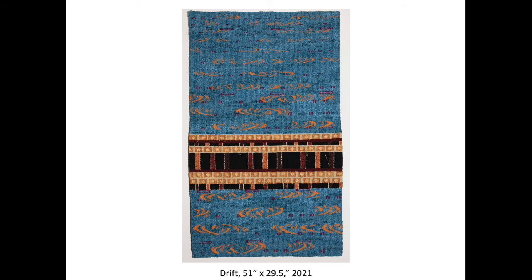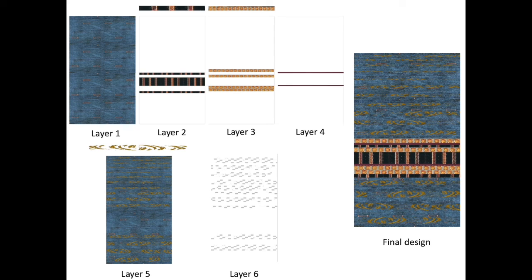I'll explain the process for Drift as well. Layer one is a detail from a blue fabric repeated four times to create the rectangular shape of the design. Layers two and three are repeats from details taken from historical textiles. Layer four is two red stripes. Layer five includes a gold motif repeated up the length of the tapestry, getting increasingly smaller as it progresses up. Layers two through five sit on top of layer one with no bleeding through these layers.